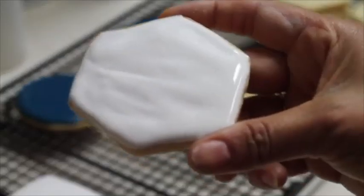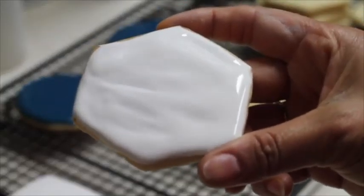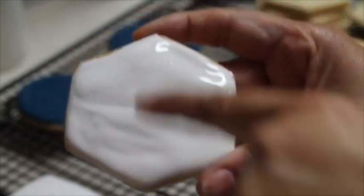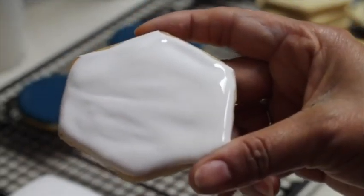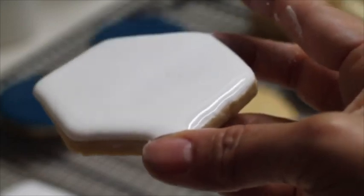If your icing looks like in this cookie it means that it needs a little bit more water because you don't want these lines on top of your cookie. It needs to look smooth like this.